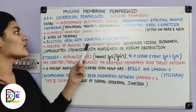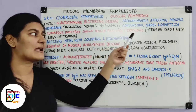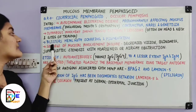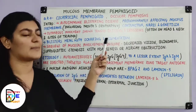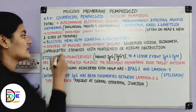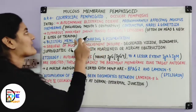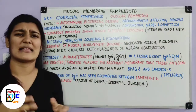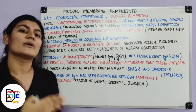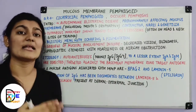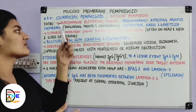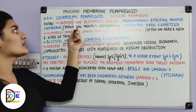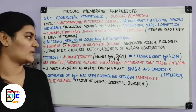Cutaneous involvement shows tense blisters and erosions often on the head, neck, and sites of trauma. Blisters heal with scarring and pigmentation. The word 'cicatricial' means to heal with scarring — since the blisters heal with scarring, this condition is also known as cicatricial pemphigoid.